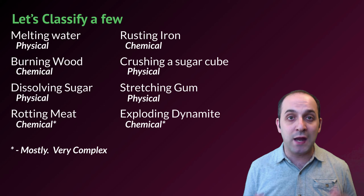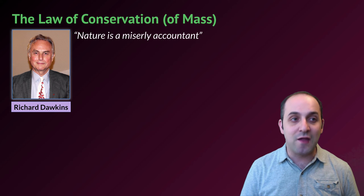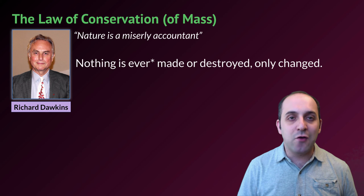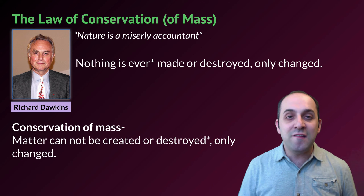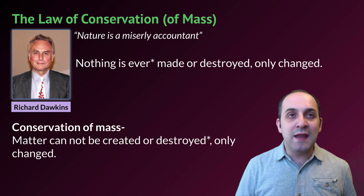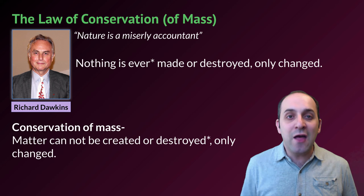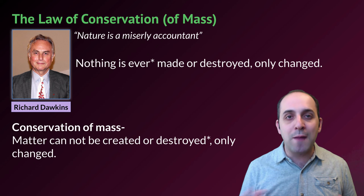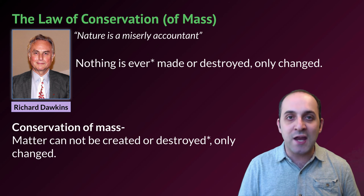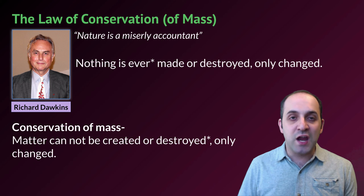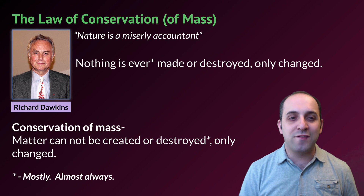It's important to understand that physical and chemical changes are a good way of thinking about things, but the universe can be more complex than our classifications. The final thing we'll discuss is the law of conservation of mass. As Richard Dawkins said, 'nature is a miserly accountant' — nothing is ever made or destroyed, only changed. Matter cannot be created or destroyed; it can only be changed. The total amount of mass we start with over the course of a change has to equal the total amount we end with.